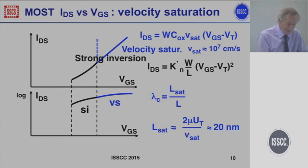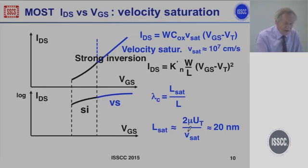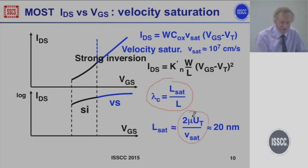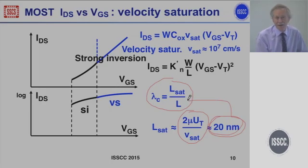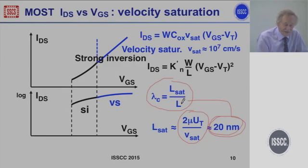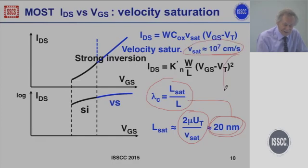How do we add velocity saturation? There is a new parameter: normalized channel length, which says how much your channel length is with respect to LSAT. LSAT is a technology parameter combining mobility, KT/Q, and velocity saturation — all about 20 nanometer CMOS. So we have a new parameter saying how close your channel length is to 20 nanometers. For 65 nanometer, this ratio is one-third. This velocity saturation model shows where we reach maximum GM, replacing the physical 10 to the 7th parameter by LSAT, which is independent of channel length.